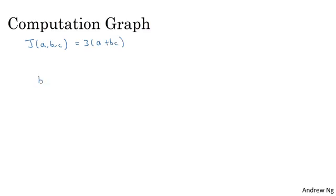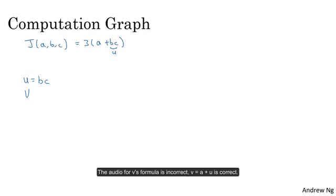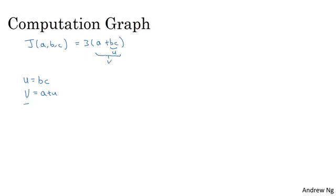The first is you need to compute what is b times c. And let's say we store that in a variable called u. So u is equal to b times c, and then you might compute v, which is equal to a plus u. And then finally, your output j is three times v. So this is your final function j that you're trying to compute.